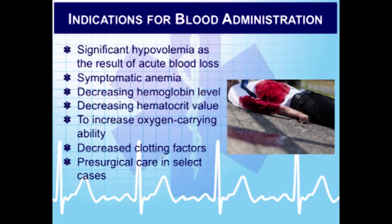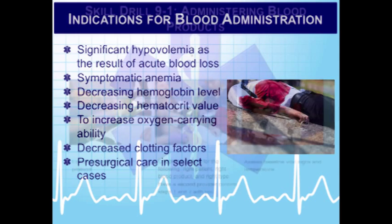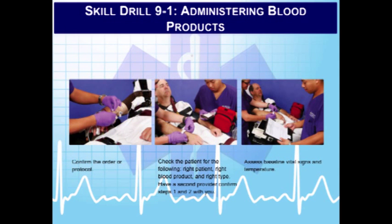When preparing to administer blood, you need a physician's order, the blood product typed and cross-matched if done — otherwise use packed red blood cells. You need an 18-gauge or larger needle (20-gauge is acceptable), a filtered IV administration set to catch any particulates in the blood, and normal saline. Do not use lactated Ringer's or D5W, as these will have an adverse effect on the blood.